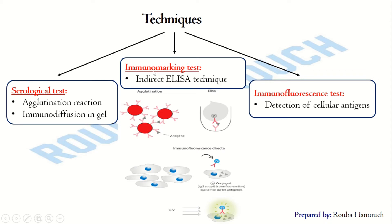Concerning the immunomarking or immunolabeling method, it relies on the coupling of a reagent with an easily identifiable marker. The ELISA technique is a highly sensitive test. By ELISA it is possible to detect very low amounts of antigens or antibodies by using an enzyme-coupled reagent and a colorless substrate that is transformed by the enzyme into a colored product.